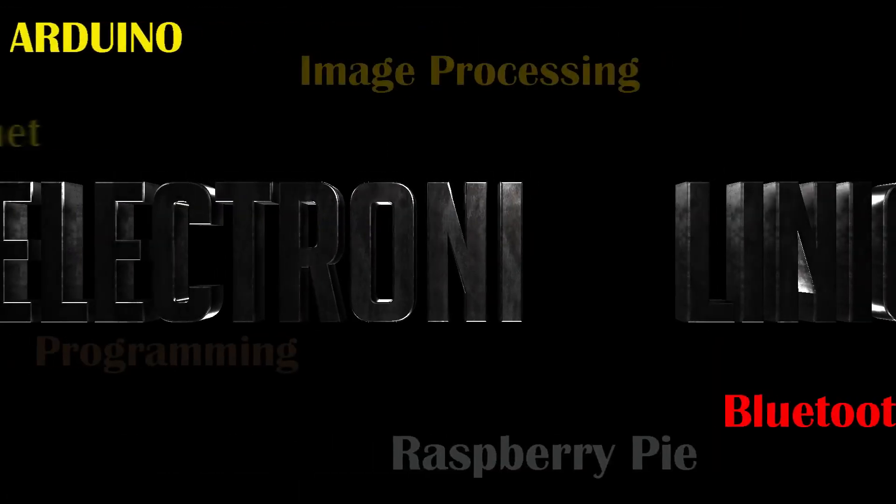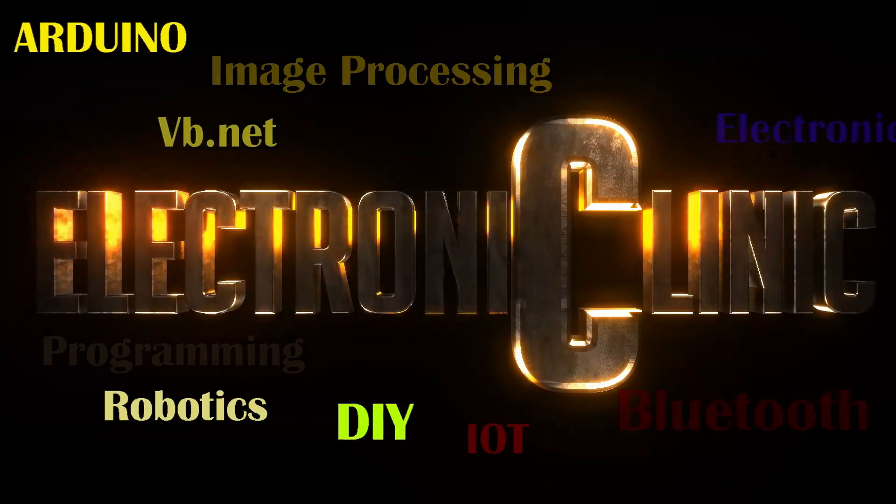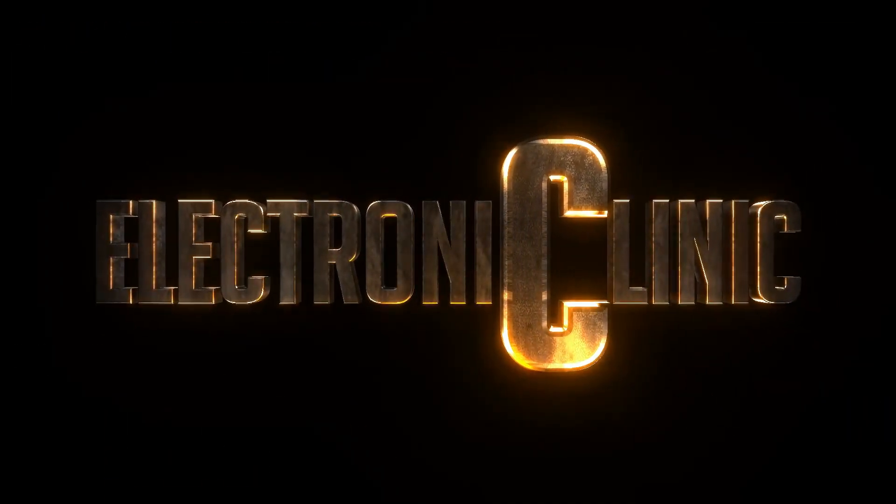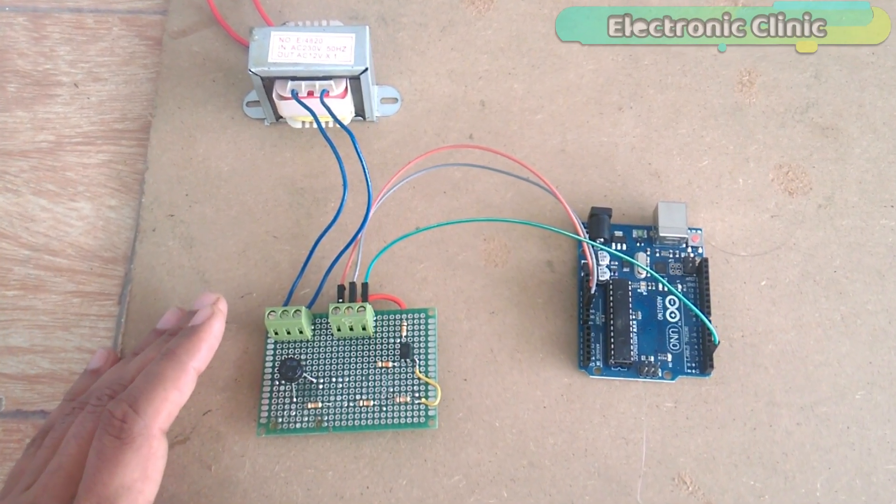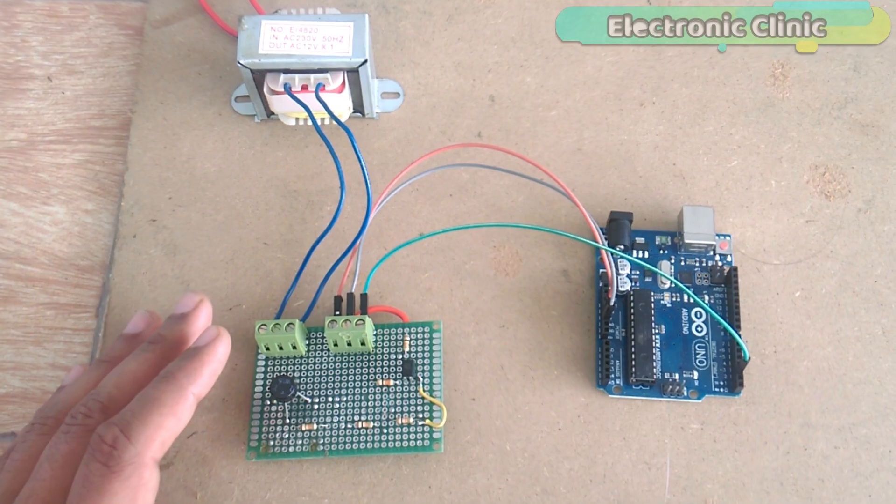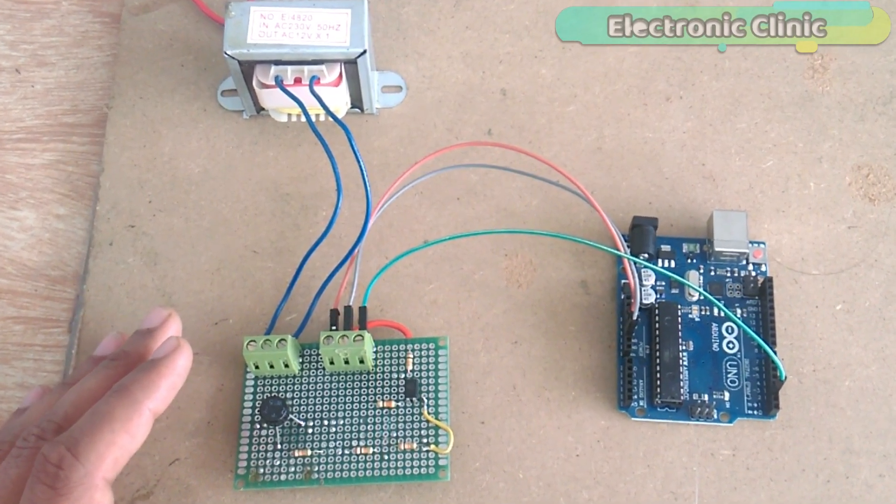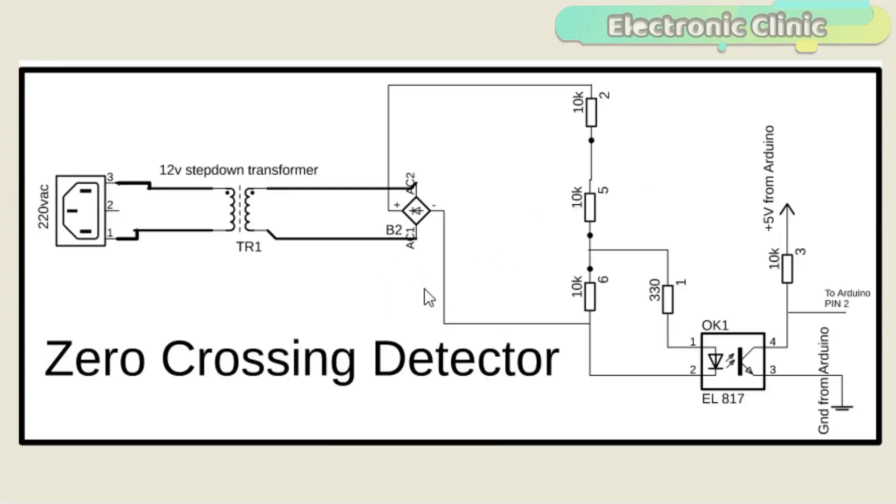The components used in this project can be purchased from Amazon. The component purchase links are given in the description. This schematic is designed in Eagle 9.1.0 version. If you want to learn how to make schematics and PCB, then watch my tutorial. The link is given in the description.